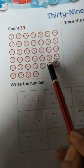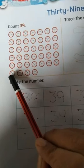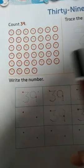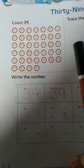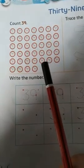31, 32, 33, 34, 35, 36, 37, 38, 39. So children how many clocks are there? Yes there are 39 clocks.